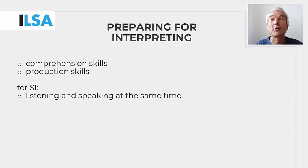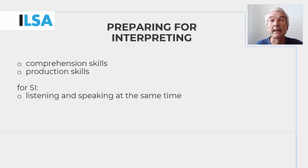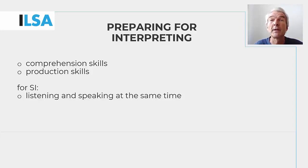As highlighted in the Introduction to Interpreting in Unit 1, the task of interpreting essentially consists in source language comprehension plus target language production in real time. In simultaneous interpreting, these two subtasks must be carried out in parallel. Preparatory exercises for interpreting therefore focus on comprehension and production skills and, specifically for simultaneous interpreting, on the skill of listening and speaking at the same time.